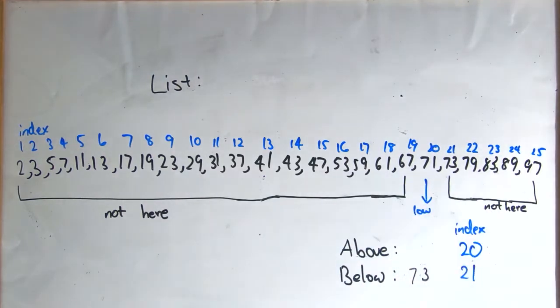Now 72 is bigger than 71, so you want to look between the 20th and 21st number, but because these are two adjacent numbers, you now know that 72 can't exist in this list.